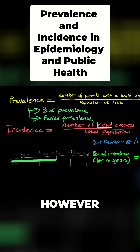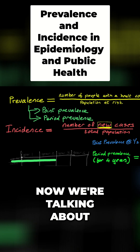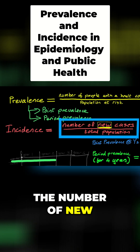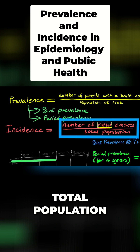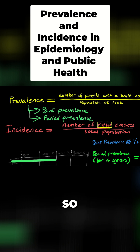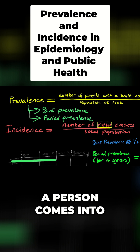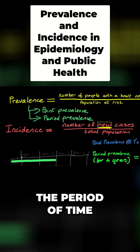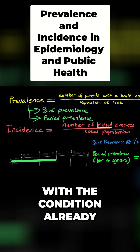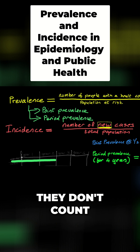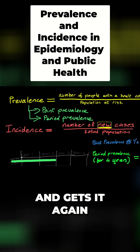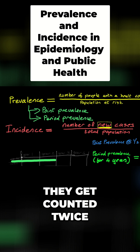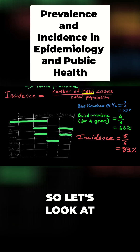Incidence, however, is a little different. Now we're talking about the number of new cases divided by the total population. The difference is: if a person comes into the period of time with the condition already, they don't count. And if the person gets the condition, recovers, and gets it again, they get counted twice. So let's look at this example.